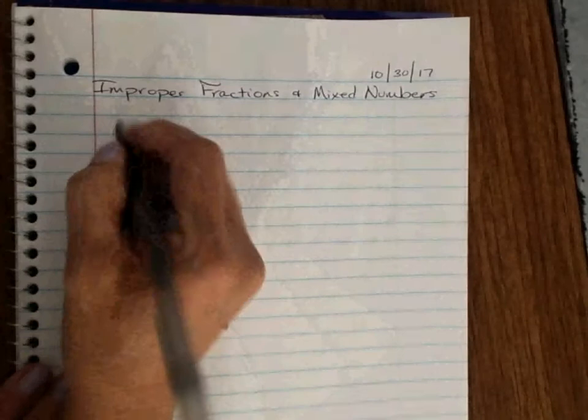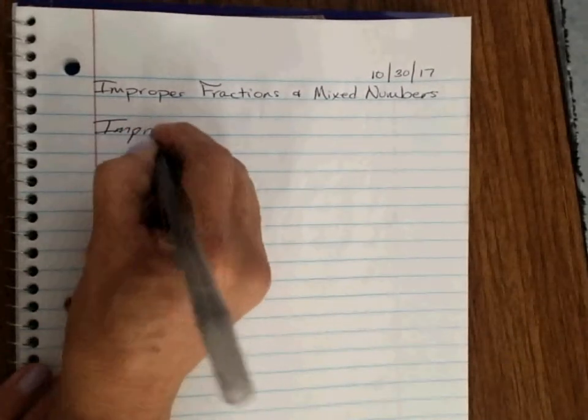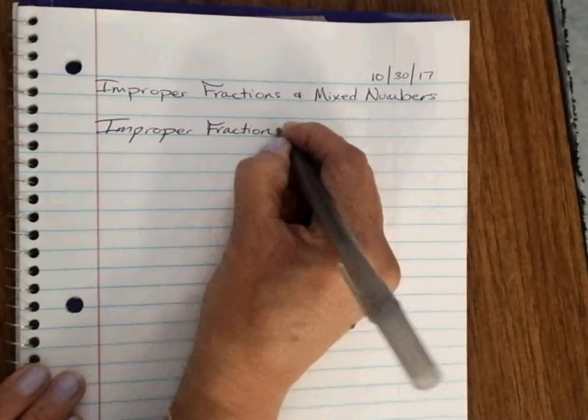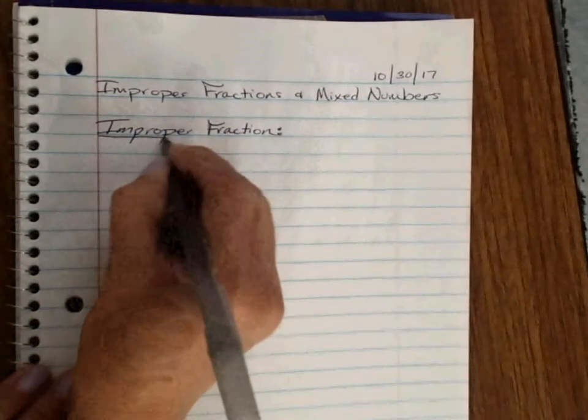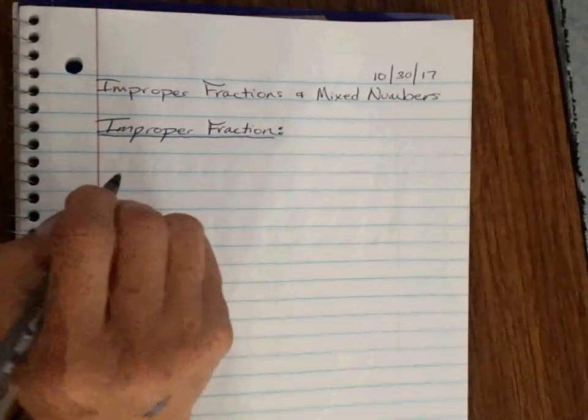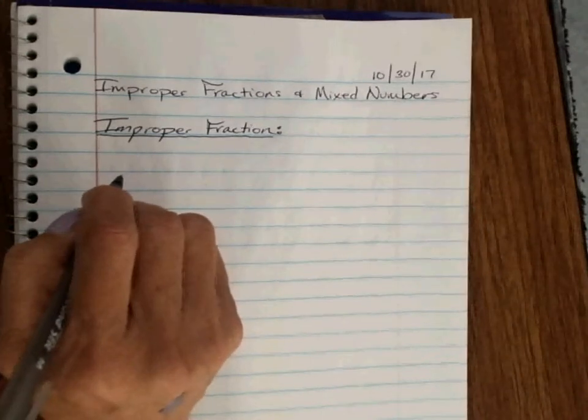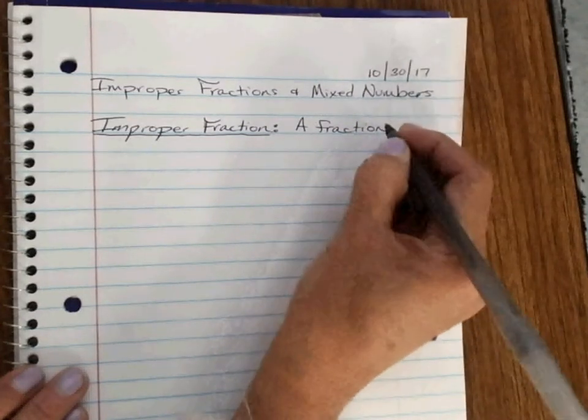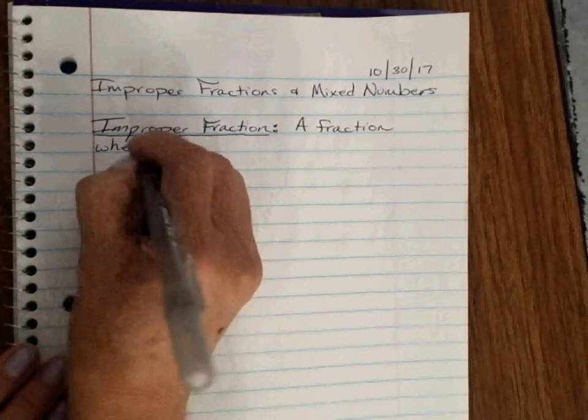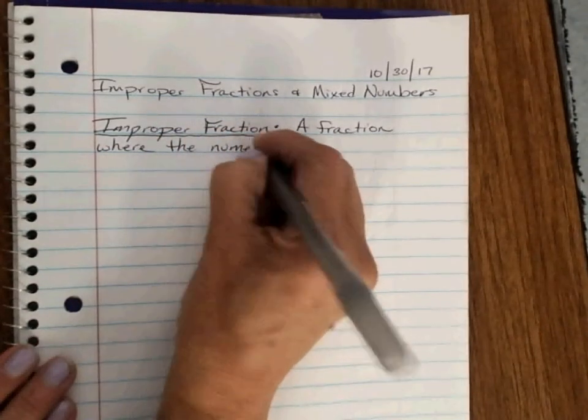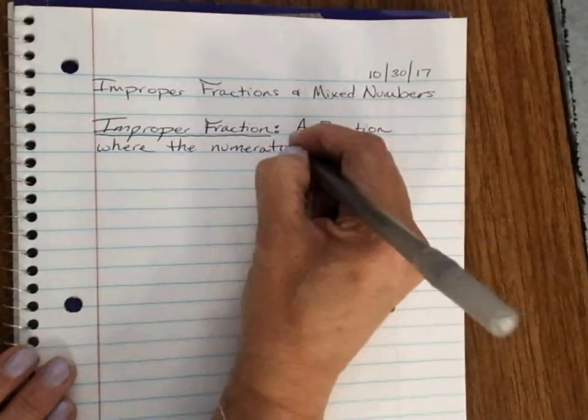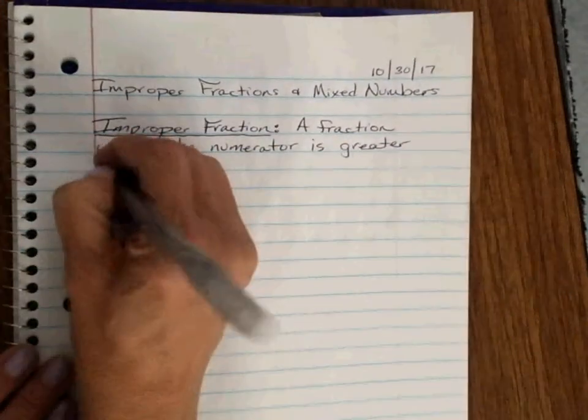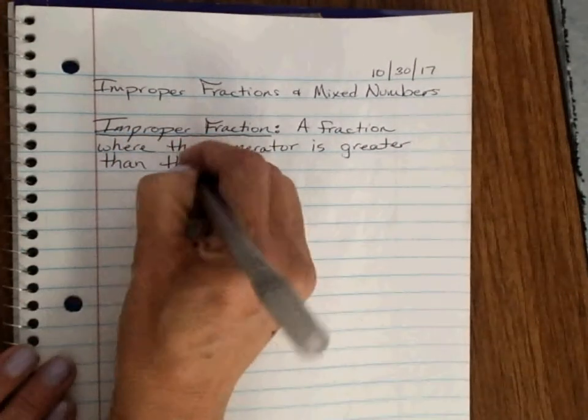So first thing that we're going to do is we are going to define an improper fraction. That is a fraction where the numerator is greater than the denominator.